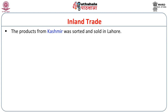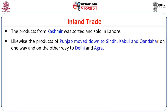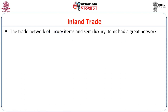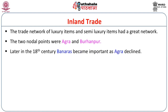The products from Kashmir were sorted out in areas of Lahore. Likewise, the products of Punjab moved to Sindh via Kabul and Kandahar on one way, and could also move to Delhi and Agra. Lahore essentially was a point where handicraft goods were displayed and distributed. The two nodal points for luxury and semi-luxury items were definitely Agra and Burhanpur. In the late 18th century, when Banaras came up as an important area, Agra lost some of its shine.